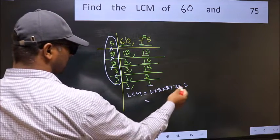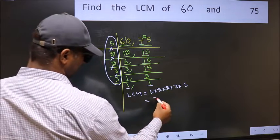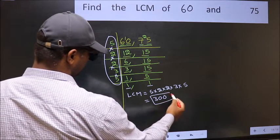When we multiply these numbers, we get 300 is our LCM.